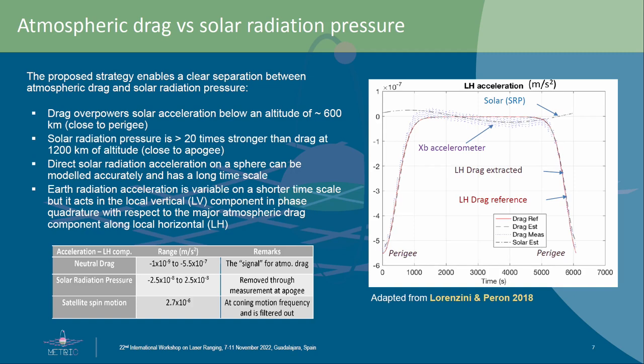Depending on the experiment, what is noise for one measurement becomes the signal for the other. We made preliminary estimations and are confident that thanks to the chosen geometry, we would be able to separate the effect due to drag from the effect due to solar radiation pressure quite well.